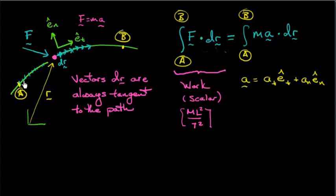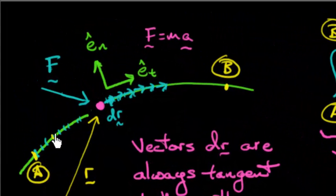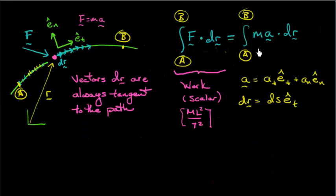But dr, remember, dr is always tangent to the path. So the dr vector is all in the e hat t. I'm going to call this ds in the e hat t. So ds is this little tiny chunk of arc length you see everywhere along here. Each little dr has a length that I'm calling ds.